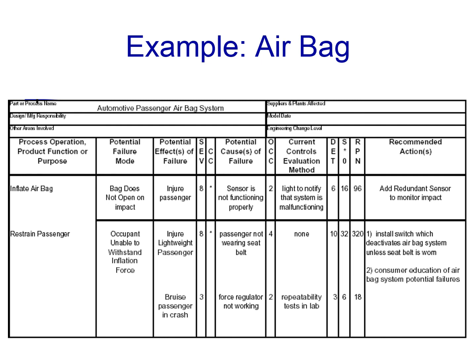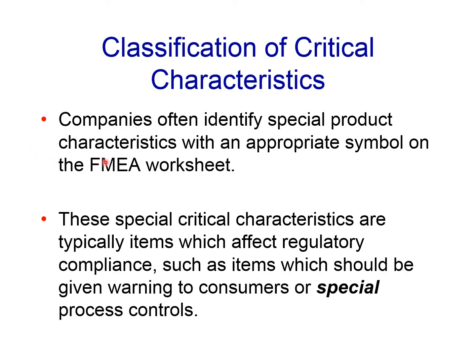Finally, companies often identify special product characteristics with an appropriate symbol on the FMEA sheet — that's what the 'CC' heading in the previous FMEA sheet referred to. A star in that column means this failure mode requires special attention because it is very critical, or sometimes it is regulatory — meaning a government regulation must be satisfied. These especially critical characteristics (CC) are typically items which affect regulatory compliance or items for which warnings must be given to customers, such as wearing a seat belt.